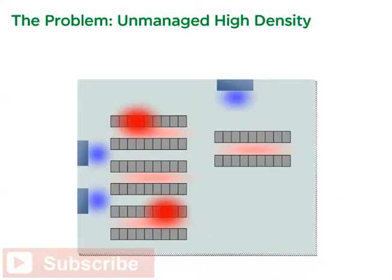Traditional data center design uses a raised floor to distribute cooling to low-density IT equipment. However, when high-density equipment is randomly installed throughout a low-density data center, the cooling stability is upset and hot spots begin to appear.